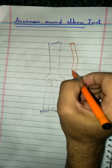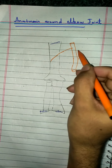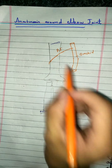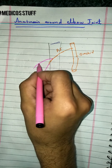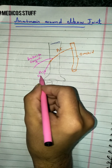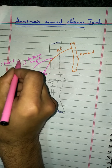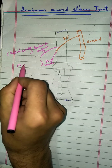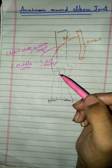The brachial artery originates from the axillary artery. It gives the profunda brachii artery, the main branch of the brachial artery. This profunda brachii branch gives two main arteries: the anterior descending branch and the posterior descending branch. The anterior descending branch is also known as the radial collateral artery, and the posterior descending branch is also known as the middle collateral artery.